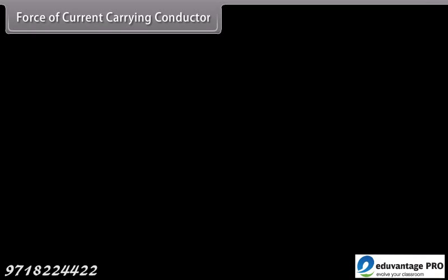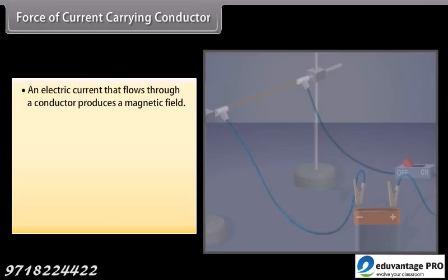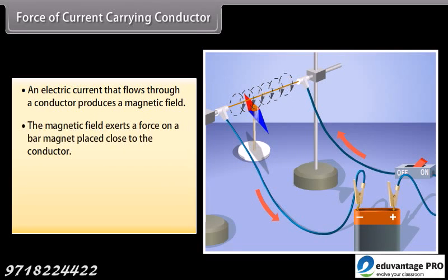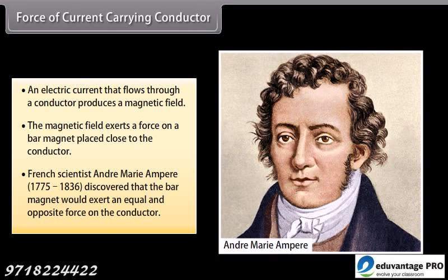Force of current carrying conductor. We have seen that an electric current that flows through a conductor produces a magnetic field. The magnetic field so produced exerts a force on a bar magnet placed close to the conductor. French scientist André-Marie Ampere, 1775-1836, discovered that the bar magnet would also exert an equal and opposite force on the conductor.